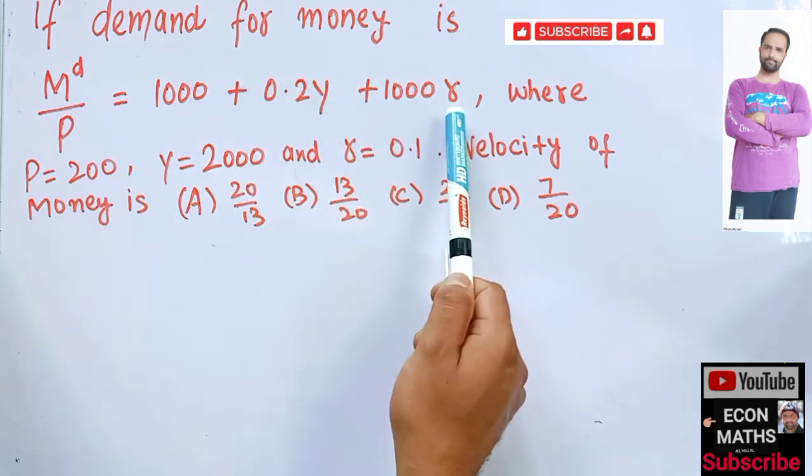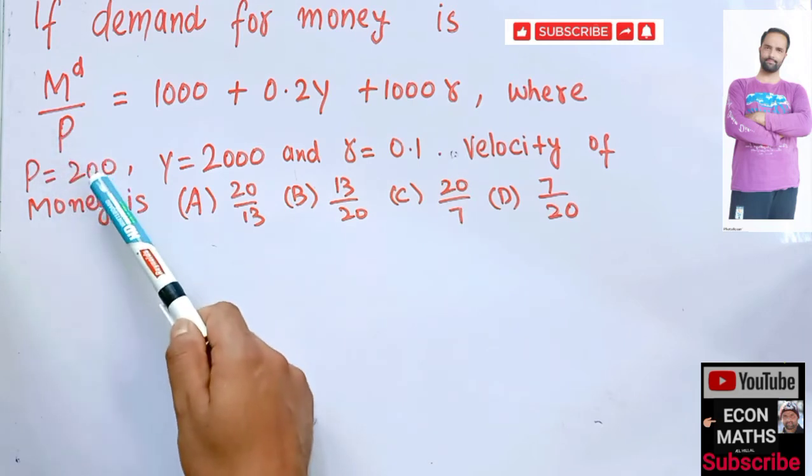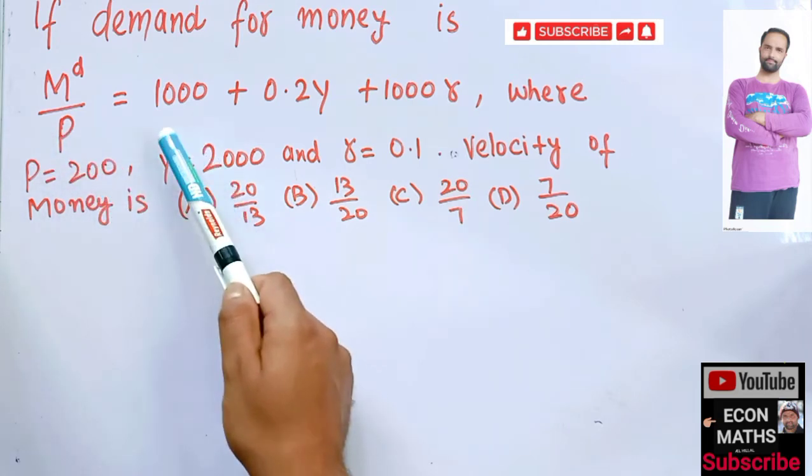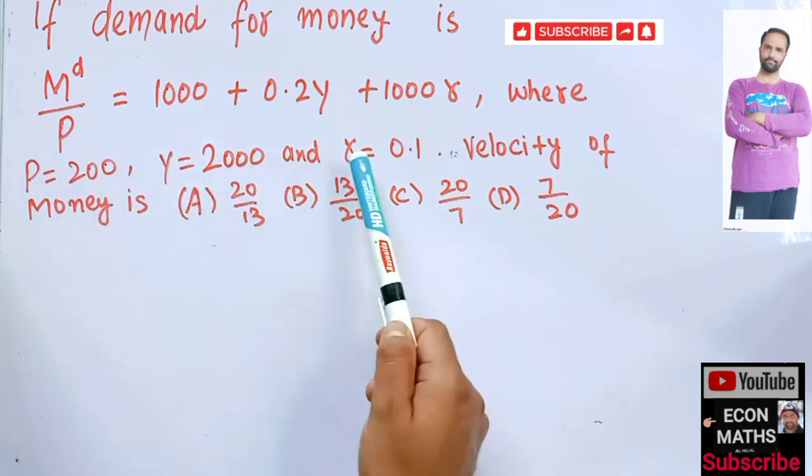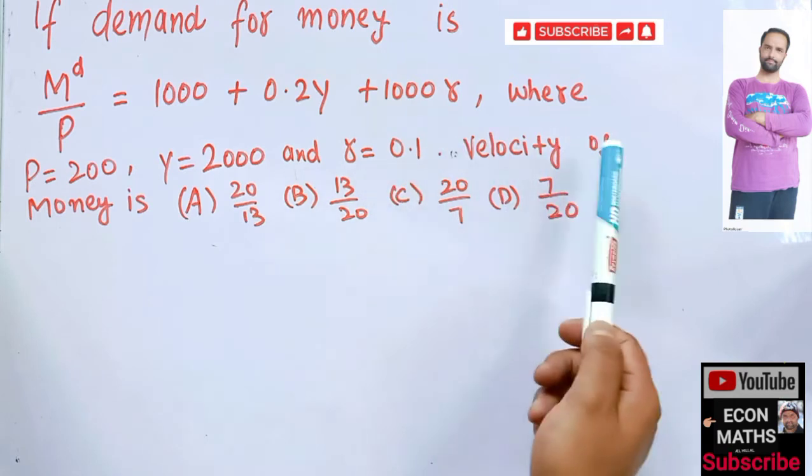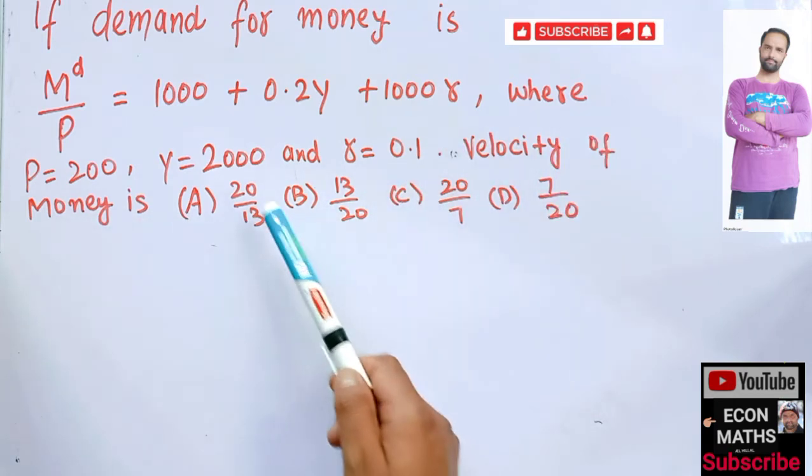Y is the GDP, r is the interest rate, price level is given as 200, GDP is 2000, and rate of interest is 0.1. We have to find out the velocity of money.